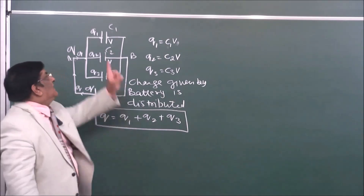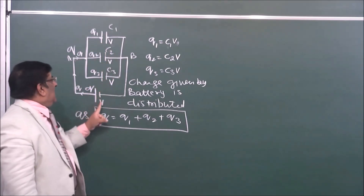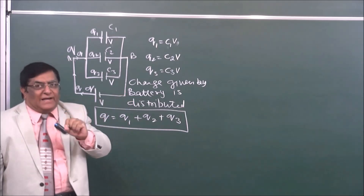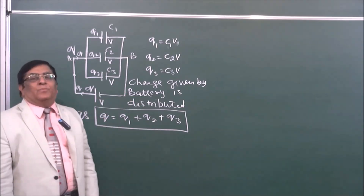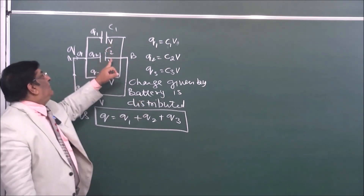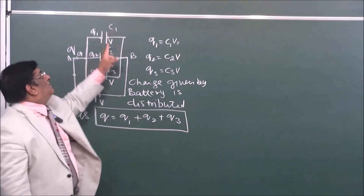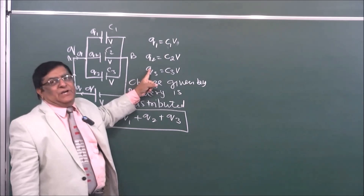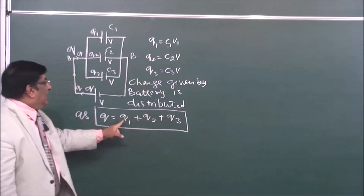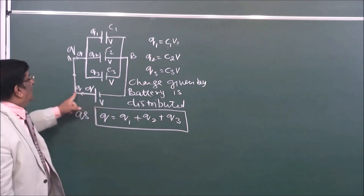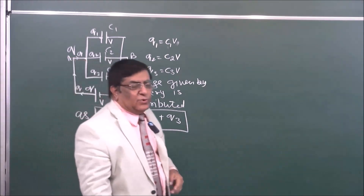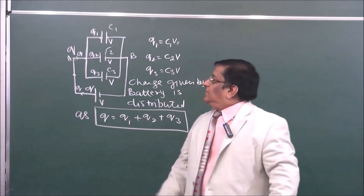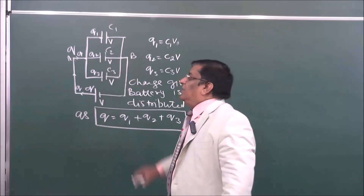A question gives us C1, C2, C3 and a battery of V. How much charge has come out from the battery? We know all V and all C values, so we can calculate the charge from each capacitor. We add all three — Q1 plus Q2 plus Q3 — and that gives us the total charge from the battery, because the charge is distributed and all charge comes from the battery and is distributed in the capacitors.